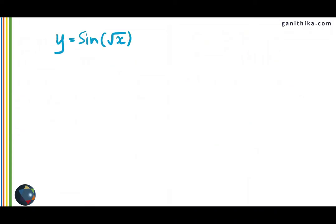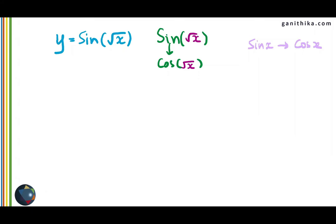Let us see more examples. Sine of root x. The outer function is sine, the inner function is root x. The differential of the outer function is cos but with root x inside. The derivative of the inner function root x is 1 over 2 root x. Multiply them both and you will get the derivative: cos of root x times 1 over 2 root x.